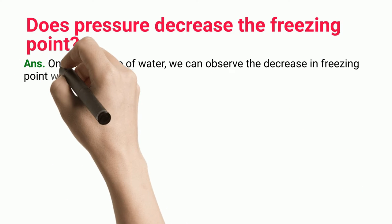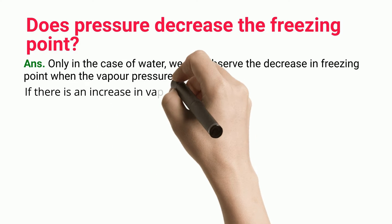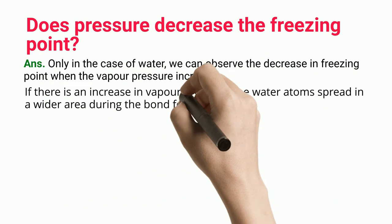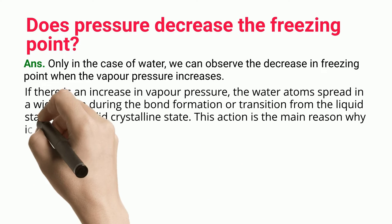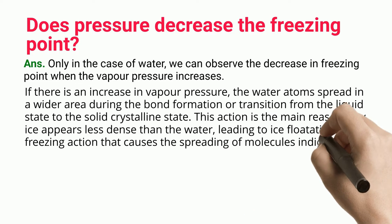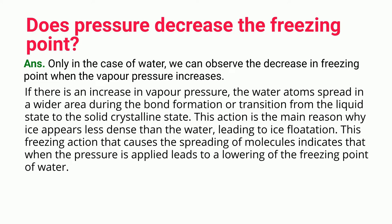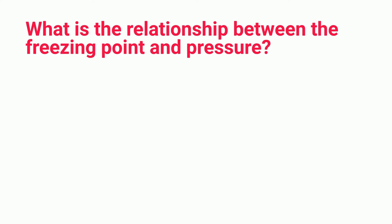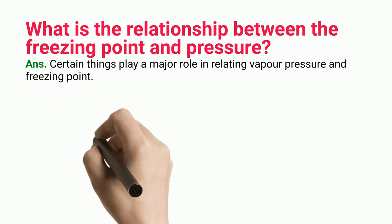Does pressure decrease the freezing point? Only in the case of water can we observe a decrease in freezing point when vapor pressure increases. If there is an increase in vapor pressure, the water atoms spread in a wider area during the bond formation or transition from liquid state to the solid crystalline state. This action is the main reason why ice appears less dense than water, leading to ice flotation. This freezing action, which causes the spreading of molecules, indicates that applied pressure leads to a lowering of the freezing point of water.